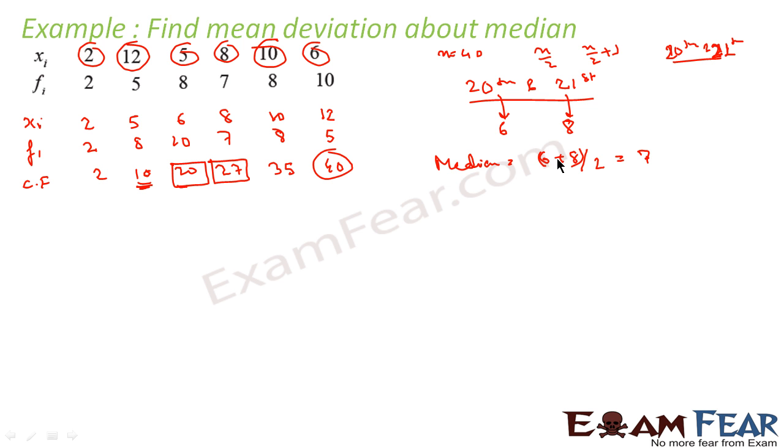Correct, so we have got the median. First thing achieved. Good, we have median now. Now we have the median, then we can now find mean deviation about median. To find mean deviation about median, we have to find the distances of all these points from the median.